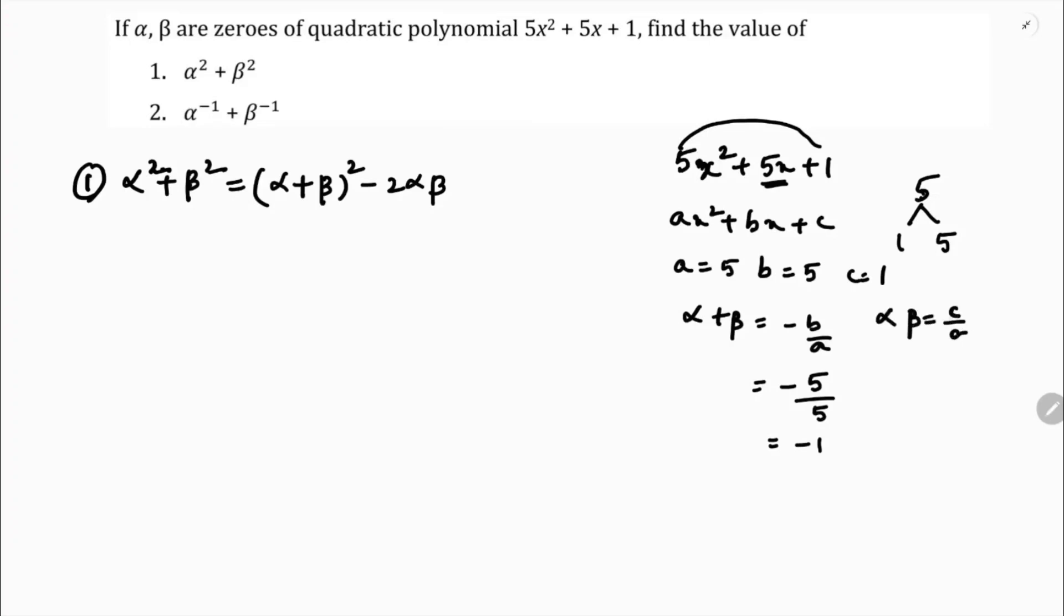Alpha into beta is c by a, which is 1 by 5. So alpha plus beta is minus 1, alpha into beta is 1 by 5. Now I will substitute the values. Minus 1 whole square minus 2 into 1 by 5. Minus 1 whole square is 1 minus 2 by 5. LCM is 5. So 5 minus 2, which is 3 by 5. The first answer is 3 by 5.